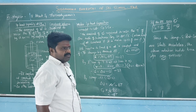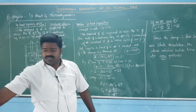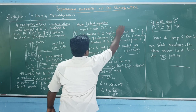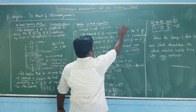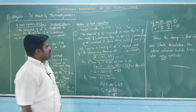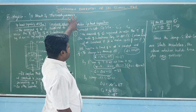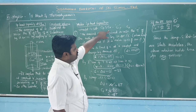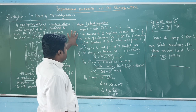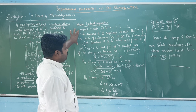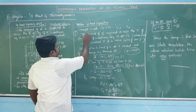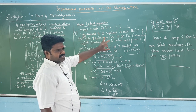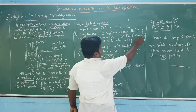Molar specific capacity is defined as the amount of heat required to raise the temperature of 1 mole of a substance by 1 Kelvin or 1 degree Celsius. So we can easily control the pressure and volume. Here the volume is kept constant.